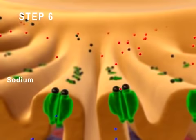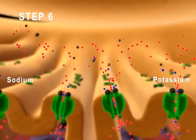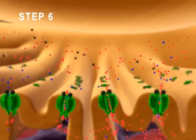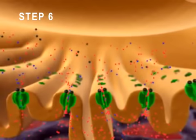Step 6: Sodium ions, shown here in red, enter the muscle fiber and potassium ions, shown here in blue, exit the muscle fiber. The greater inward flux of sodium ions relative to the outward flux of potassium ions causes the membrane potential to become less negative.